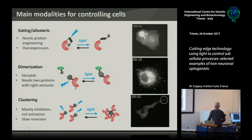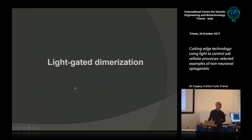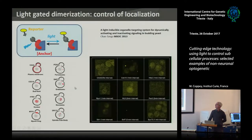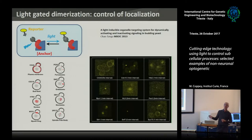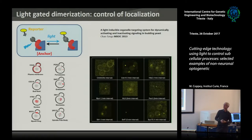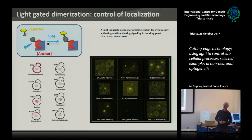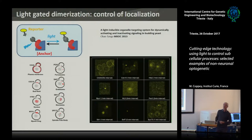I'll start with the light-gated dimerization, explaining how it works. The idea is to form a complex between two proteins upon light exposure. You fuse one of these partners — the recruitable one — to an anchor targeting a sub-cellular compartment. This is an example in yeast where you can target almost all compartments: intracellular compartments, the plasma membrane, the nucleus, the nucleolus, any kind of structure you have in the cell.